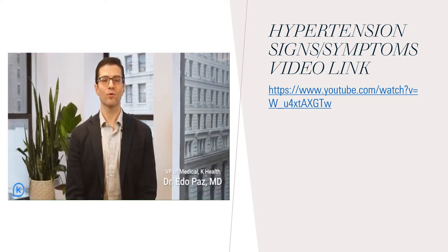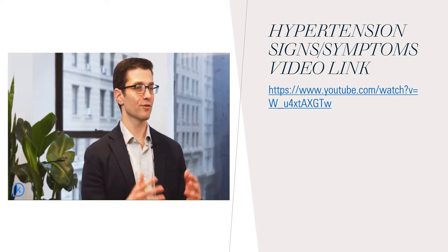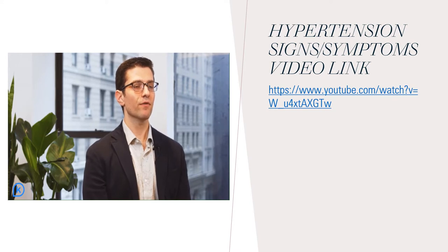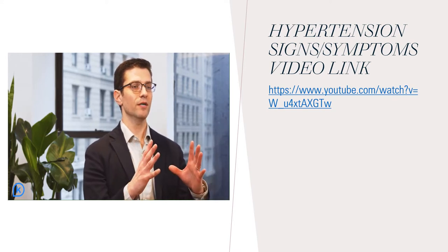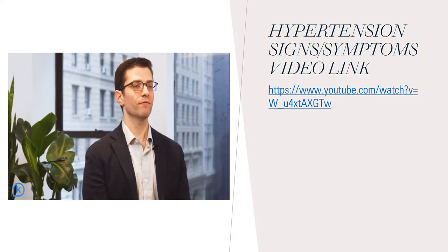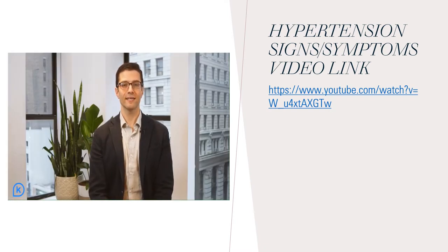As a practicing internist and cardiologist, one of the most common problems I see patients for is hypertension. Hypertension, also known as high blood pressure, is defined based on numbers. The first number is the pressure of blood when your heart is contracting; the second, lower number is the pressure of the blood inside your blood vessels when the heart is relaxing. Hypertension is a disease we call a silent killer because you may not have any symptoms. That's why it's important to get your blood pressure checked at least once a year — a recommendation for all adults older than 18.